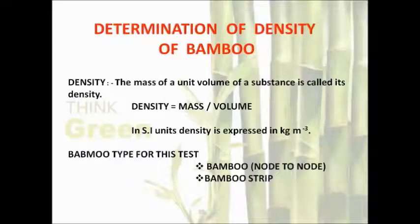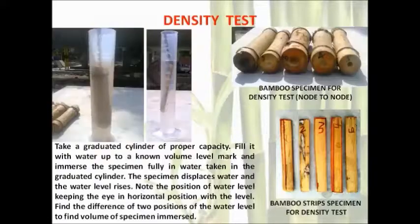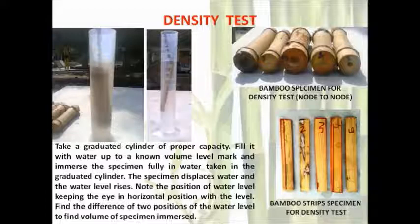In this project we are testing three types of properties of bamboo: density, compression test, and tensile strength. For the first test, we are determining the density of the bamboo. This slide shows images of the density test with two specimen types — one is a bamboo specimen for density test node to node, and another is a standard bamboo specimen for density test. We determine the volume by Archimedes principle and the mass using a spring balance.